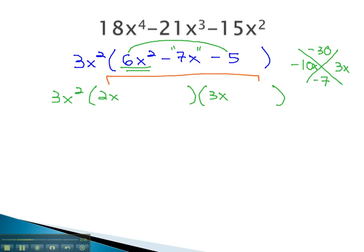We get the right numbers by remembering we multiply outside and inside to get those pairs. If we factor 2x out of negative 10x, we get negative 5.